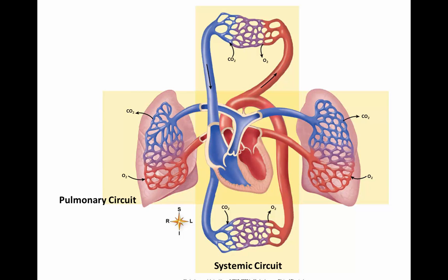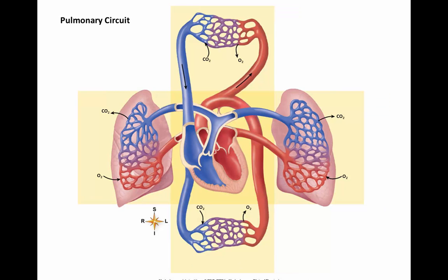Let's take a look at the double circulatory system in humans. It is made up of both a systemic pathway, which transports blood from the heart to all body areas and then back to the heart, and a pulmonary pathway, which transports blood to the lungs and then back to the heart. We will begin with the pulmonary circulatory route.